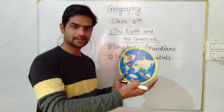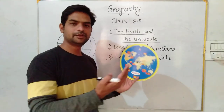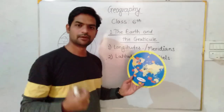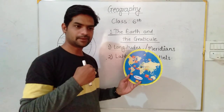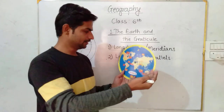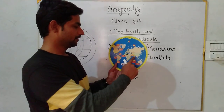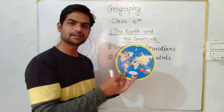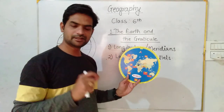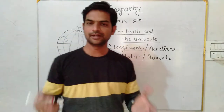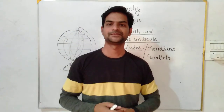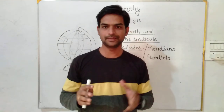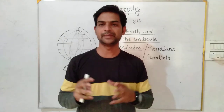To travel from one country to another country, we use means of transportation just like aeroplanes. When pilots travel from one country to another country — for example, from India they are going to America — pilots need some imaginary lines because it is very difficult to find out a country on the Earth. To identify the location of a country or a place, we need some imaginary lines.